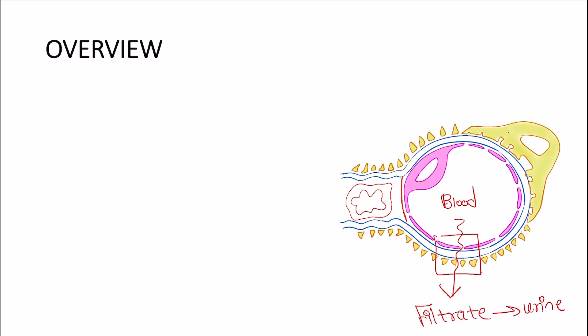The glomerular filtration barrier normally prevents the passage of protein from the blood into the urine. In minimal change disease, there is damage to this cell called the podocyte, which forms the outer layer of the glomerular filtration barrier. Damage to this cell results in a leaky barrier that allows the passage of proteins from the blood into the urine, and that's why these patients lose massive amounts of protein into the urine, which forms the basis of nephrotic syndrome.